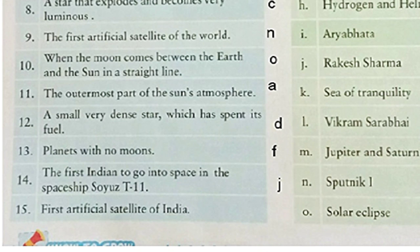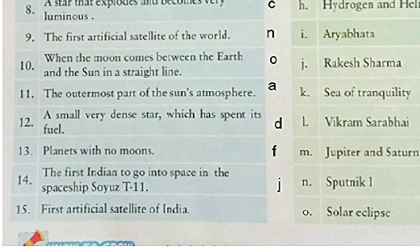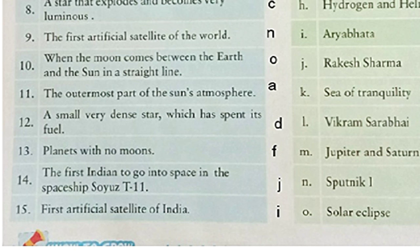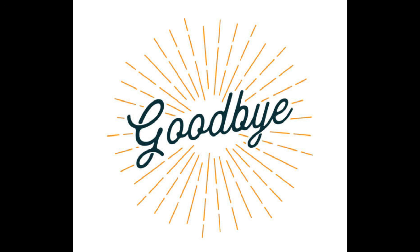Now we'll see our last question of this match the following: first artificial satellite of India. It is Aryabhata and the answer is given in option I. So, scholars, with this we have completed all the exercises of Unit 5. I am going to wind up this video. But make sure you all will do all these exercises in your book. Goodbye scholars. Take care.